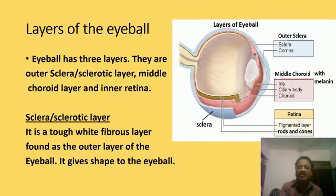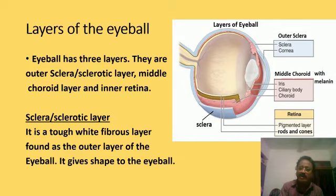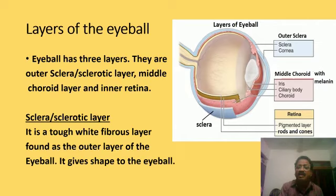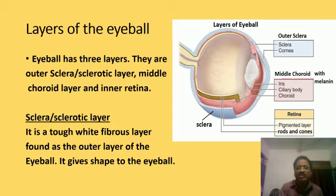Next, we will discuss the layers of the eyeball. The eyeball has three layers: the outer sclera or sclerotic layer, the middle choroid layer, and the inner retina. From the diagram, the bluish colored region represents the sclera, the pinkish colored region represents the choroid, and the brownish colored region represents the retina.